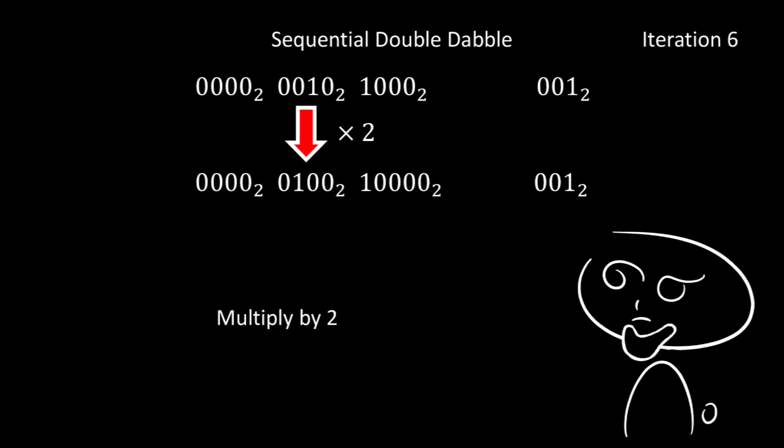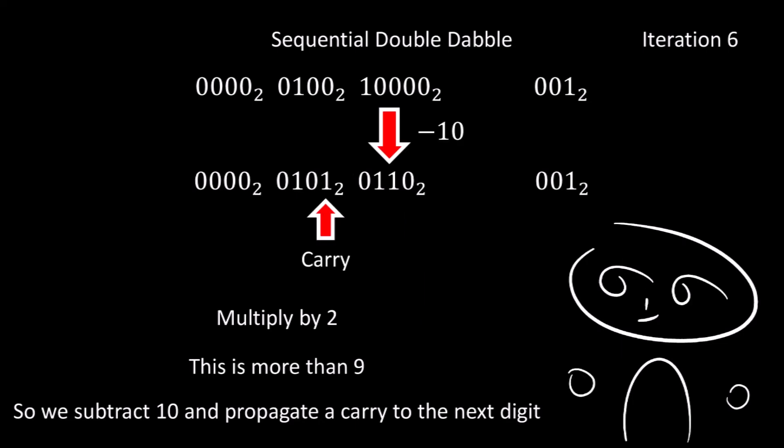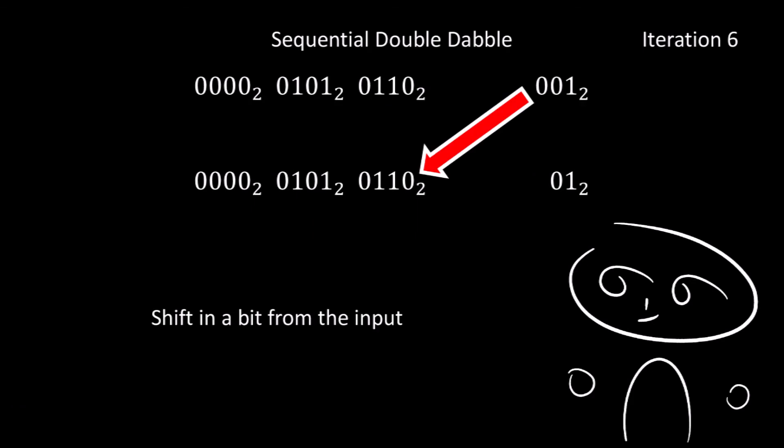So for the sixth iteration, we again multiply by 2. So the 2 goes to 4, and the 8 goes to 16. Now since 16 is more than 10, we must subtract 10 and propagate a carry into the next digit. So subtracting 10 from 16 gives us 6, and we add a carry to the next digit, turning the 4 into a 5. Then finally, we insert a bit from the input. This happens to be 0, so the 6 remains as a 6.